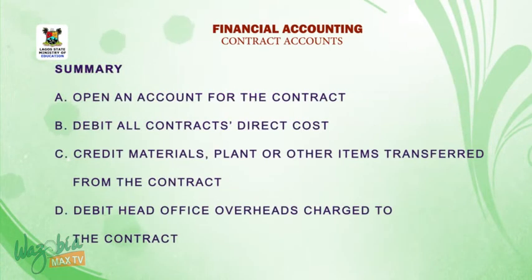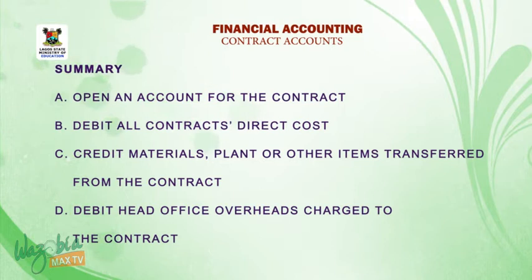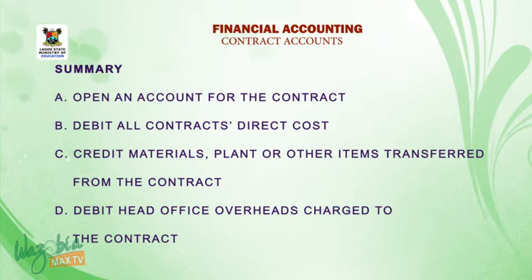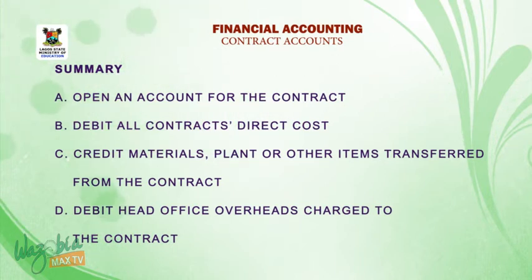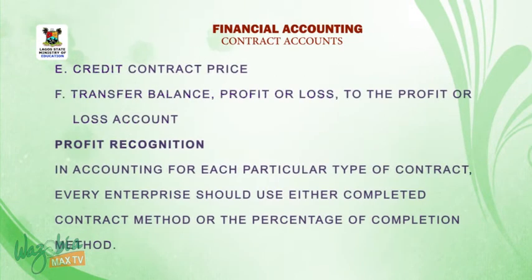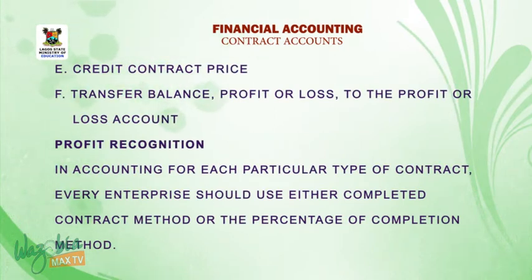Summary of accounting entries: A. Open an account for the contract. B. Debit all contract direct costs. C. Credit materials, plant, or other items transferred from the contract. D. Debit head office overhead charged to the contract. E. Credit contract price. F. Transfer the balance — profit or loss — to the profit or loss account.